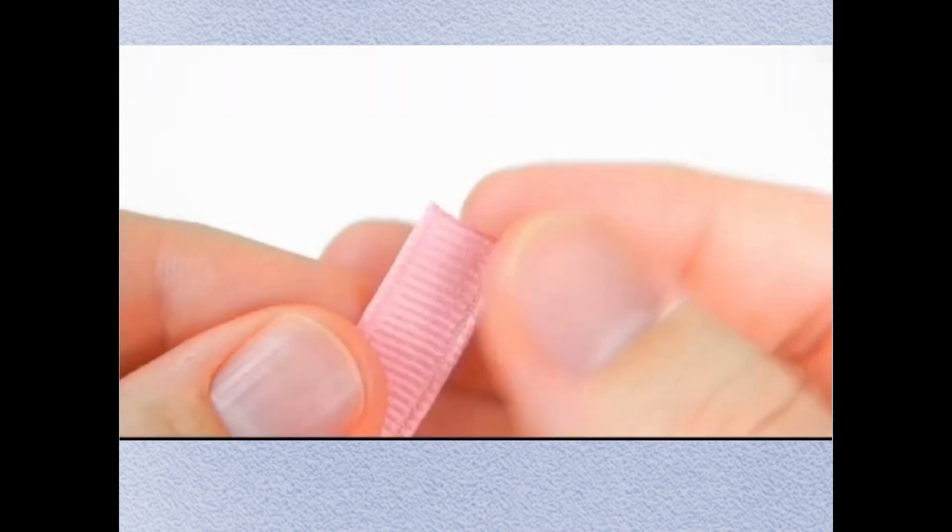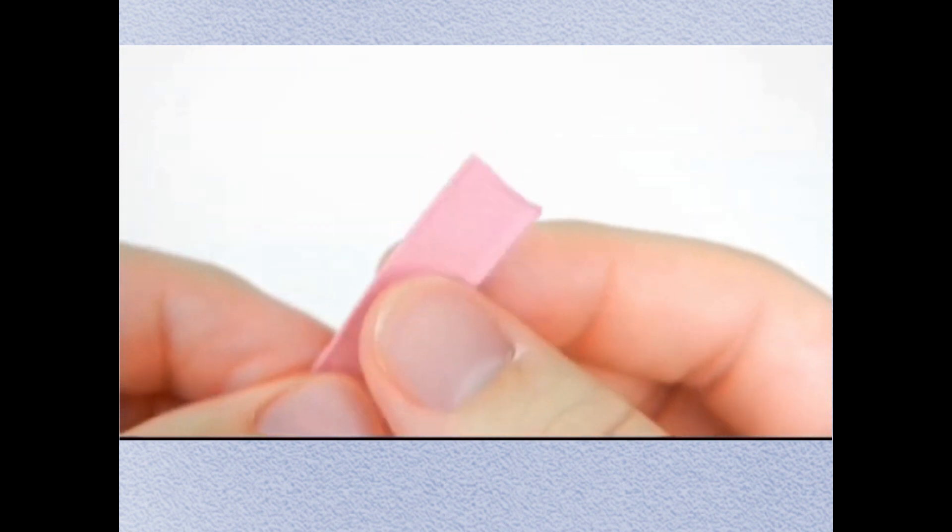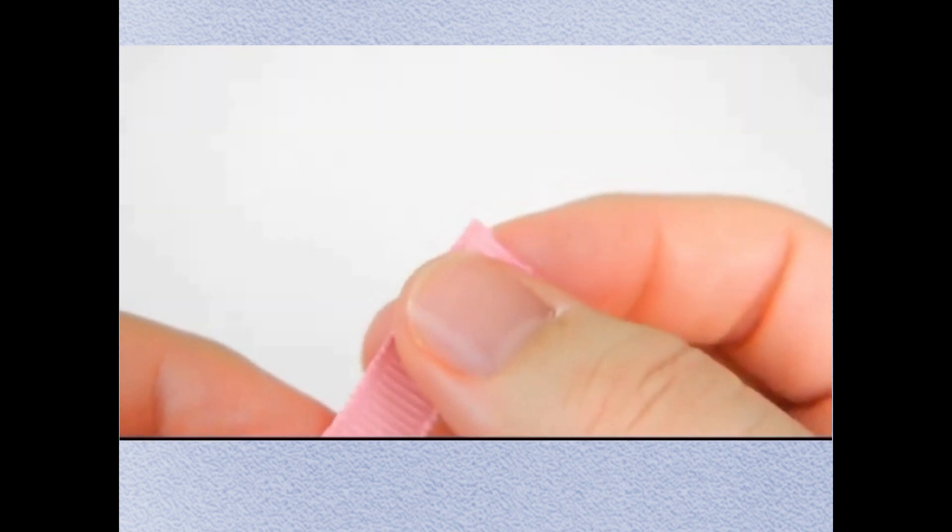That shows you a little bit of how you can seal your ribbon using these two methods. Just go ahead and check that. If you see a little bit more that you need to do, then go ahead and do a little bit more.